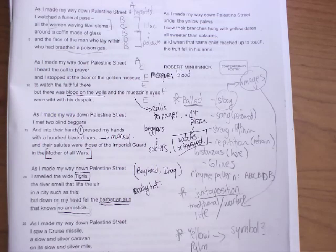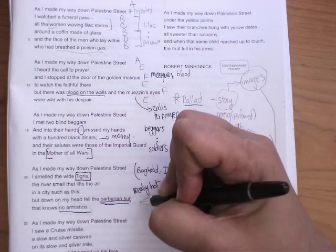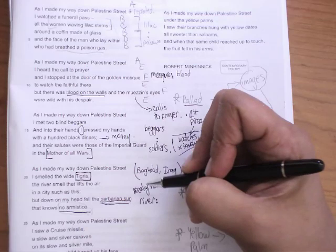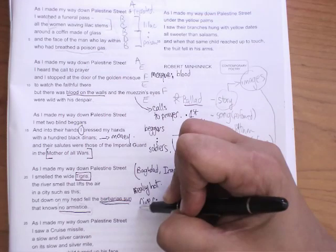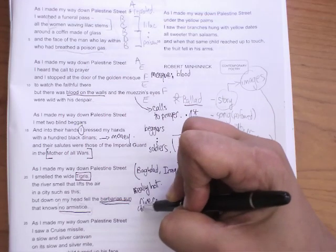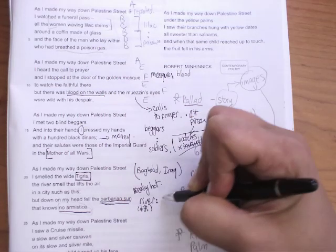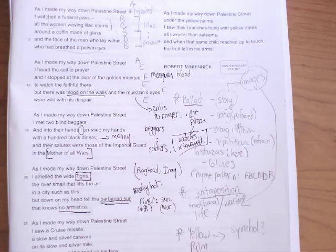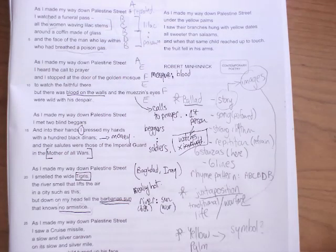Armistice is the point of surrender. And it's strange that the natural imagery here is one of a river that's really lifts the air. I'm just going to put lifts. And the sun that's going to war. The sun itself is barbarian and going to war.